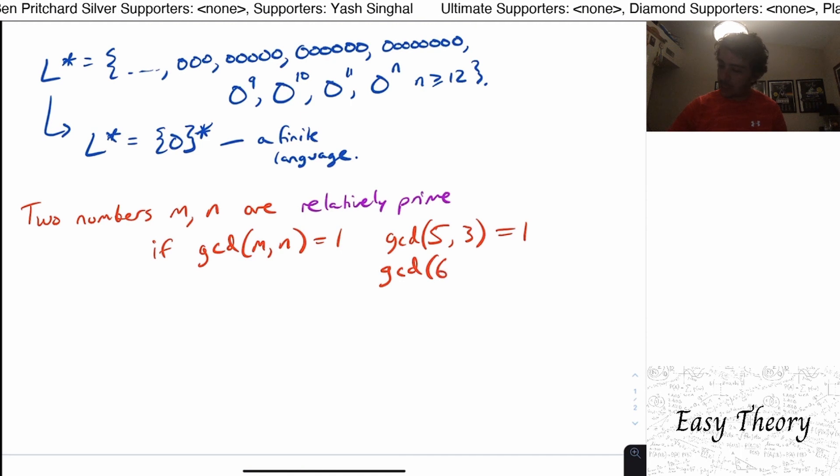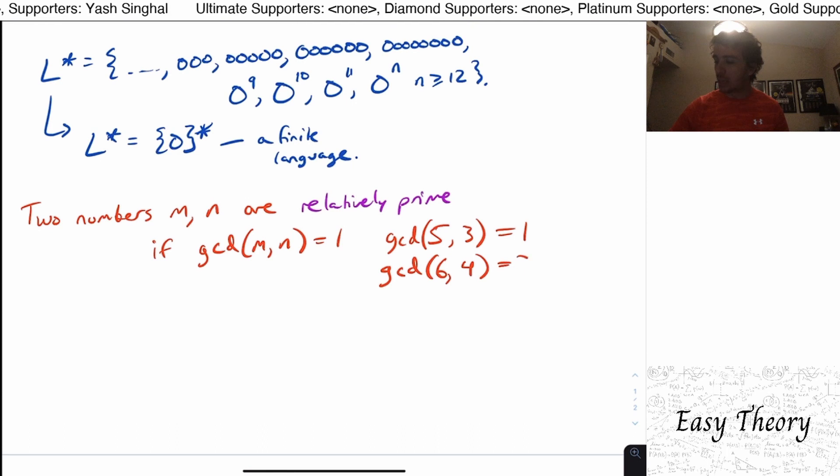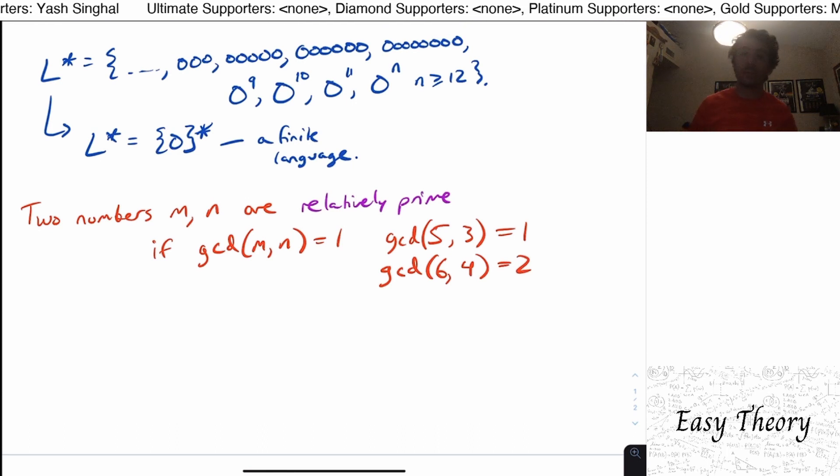But if we instead picked, let's say, six and four, well, one divides both of these, but two also does. Four doesn't divide six. So then the greatest common divisor among these is two.